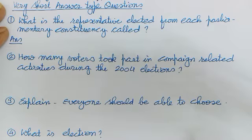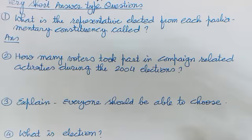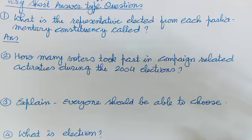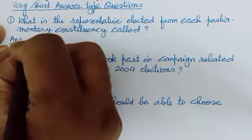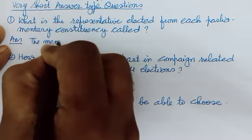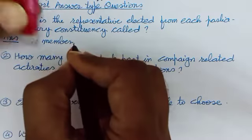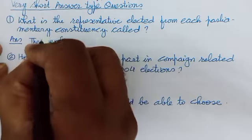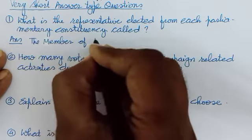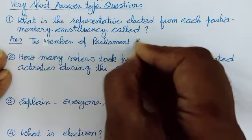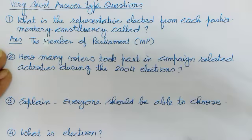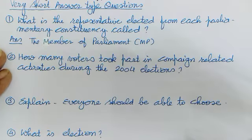Now we will see very short answer type questions. What is the representative elected from each parliamentary constituency called? Jo elect hoga parliamentary constituency se usse kya kahenge? That is called the Member of Parliament — MP. Jabki assembly constituency se hoga to MLA kaha jayega.